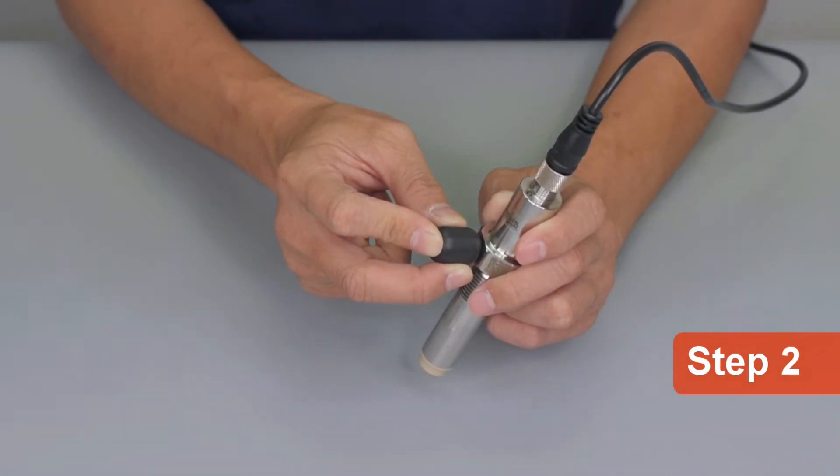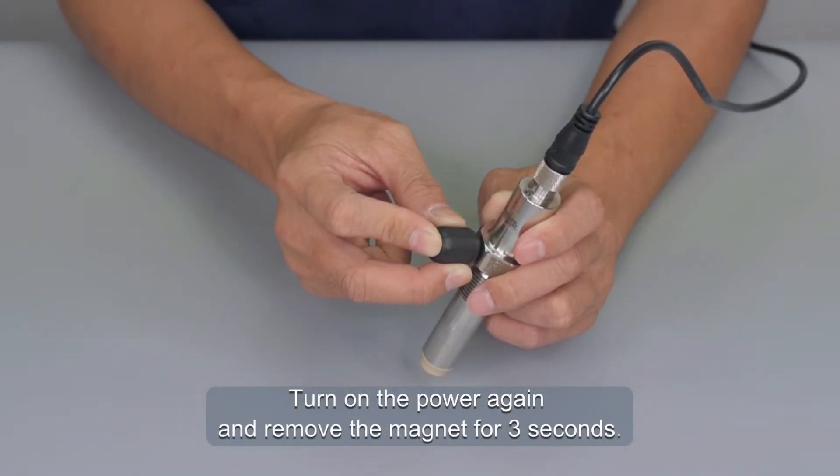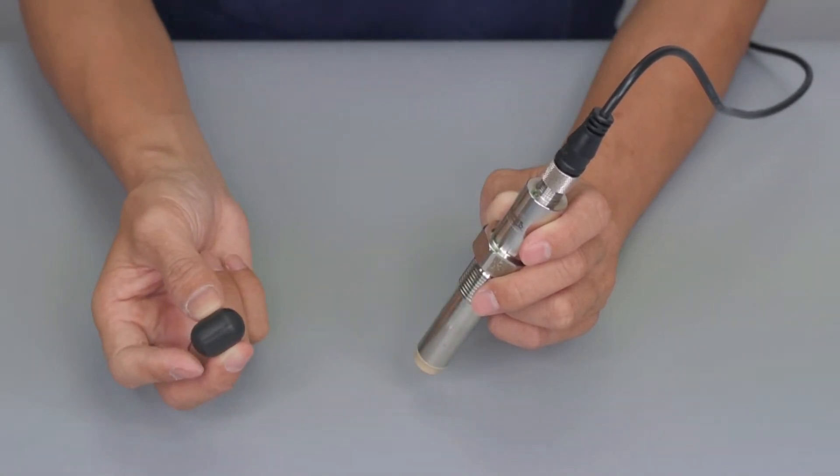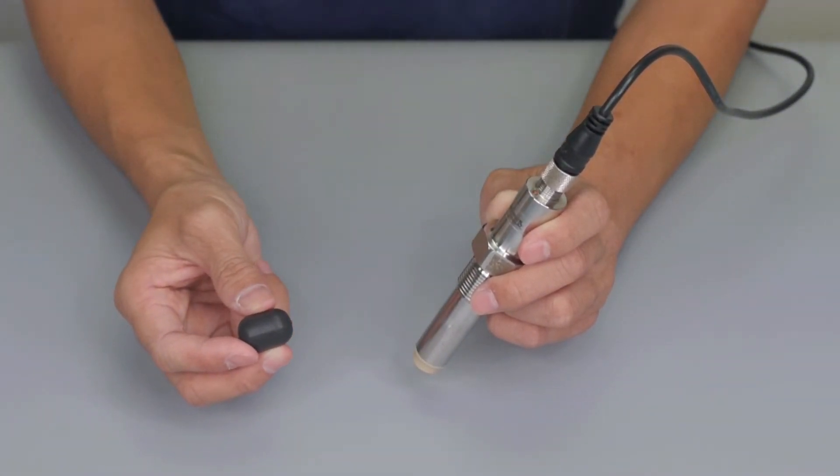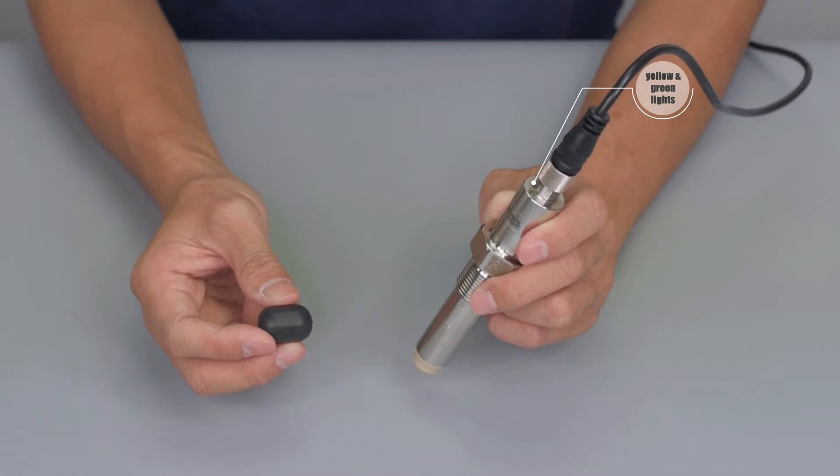Step 2. Turn on the power again and remove the magnet for 3 seconds. The yellow and green lights will flash in an interval of 2 seconds, and the sensor will be ready to be magnetically calibrated.